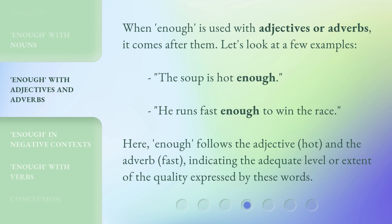When 'enough' is used with adjectives or adverbs, it comes after them. Let's look at a few examples: 'The soup is hot enough.' 'He runs fast enough to win the race.' Here, 'enough' follows the adjective 'hot' and the adverb 'fast,' indicating the adequate level or extent of the quality expressed by these words.